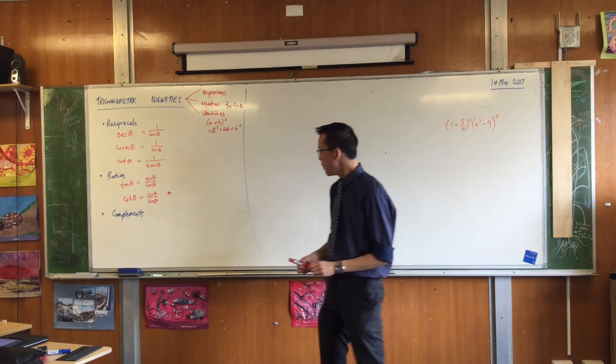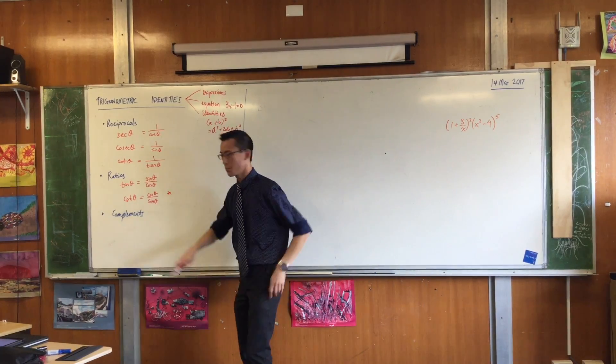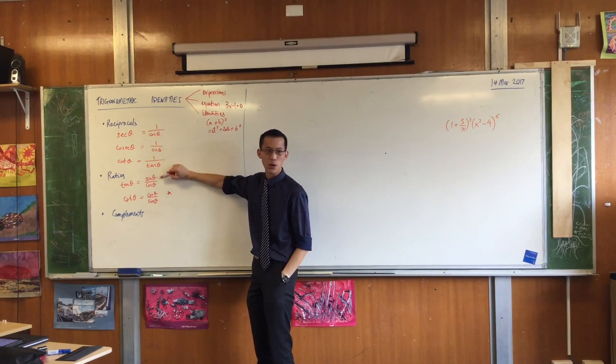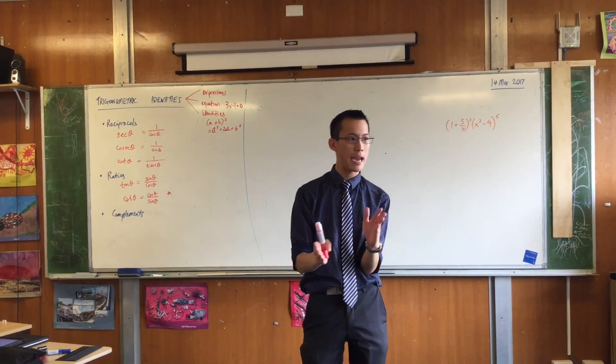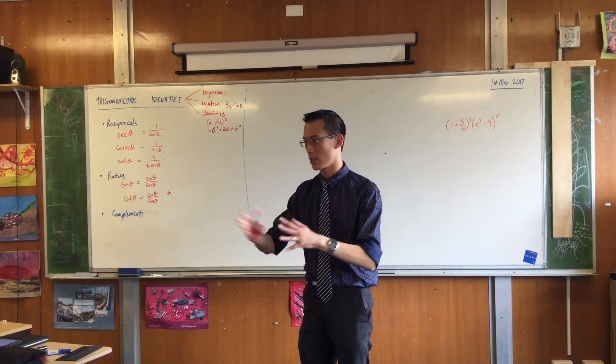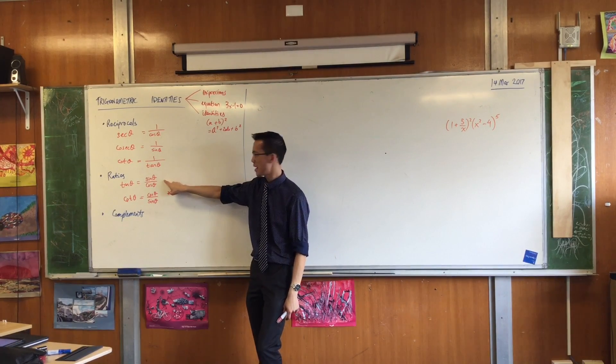That's important because some values, we actually encountered this the other day when we were graphing. Some values of tan don't exist, right? Do you remember that? Within our normal 0 to 360 domain, which values of theta don't exist? 90. 90 and 270. You get a vertical asymptote on this guy, right?